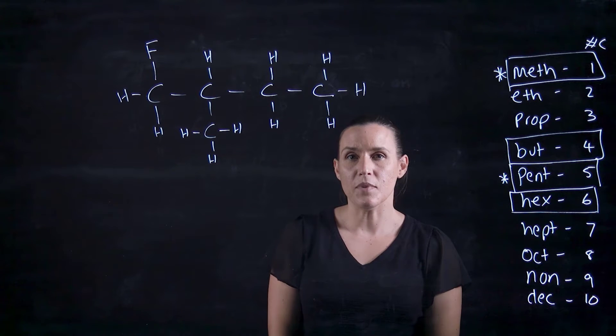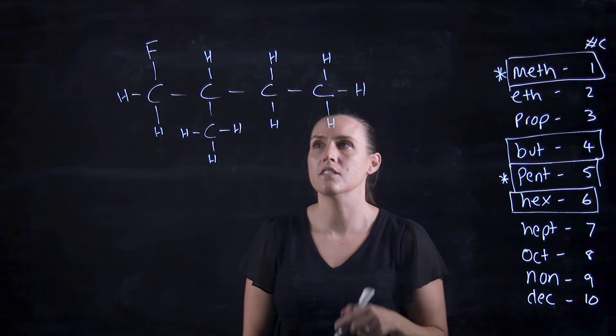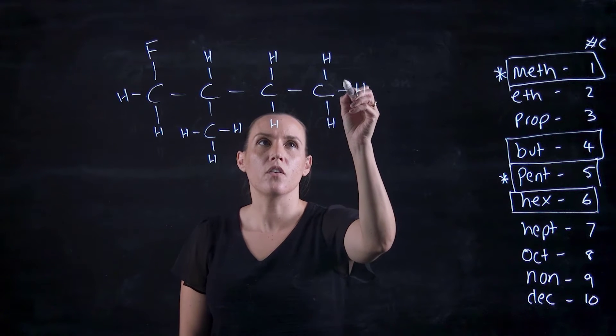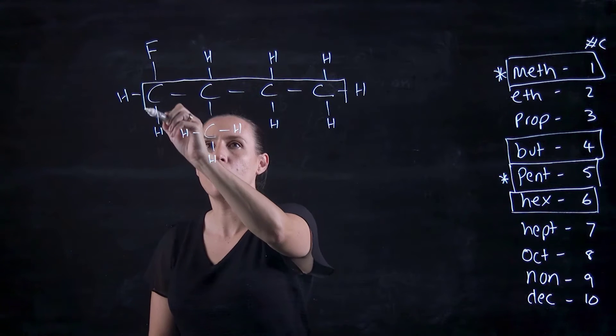So the way that we would name this is first of all you want to find the longest continuing chain of carbons. So if I go one, two, three, I can go four across the top